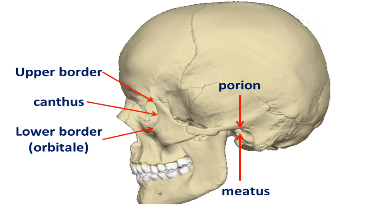Let's take a look at the orbit. We see the upper border, the lower border which is called the orbitale, and the lateral side which is the location of the canthus of the eye. We also see the outer part of the external auditory canal. Its upper border is called the porion, while its middle is called the meatus.